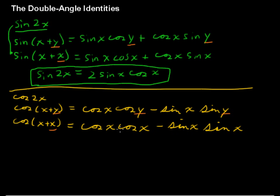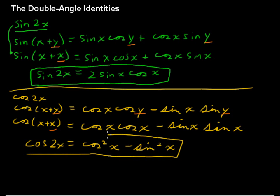And now this is just cos squared minus sin squared, or more specifically cos squared x minus sin squared x. So cos of 2x equals cos squared x minus sin squared of x.